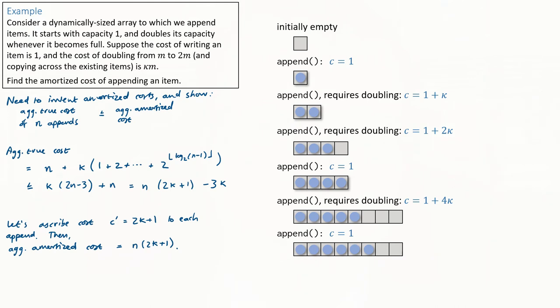This equation kind of tells us what our amortized costs should be. The aggregate true cost grows linearly in N, it's N times 2 kappa plus 1. So let's just describe amortized cost 2 kappa plus 1 to each of the appends. That means that the aggregate amortized cost is just N times 2 kappa plus 1. And so clearly, the fundamental inequality is satisfied for a sequence of any length. Therefore, these are legitimate amortized costs.